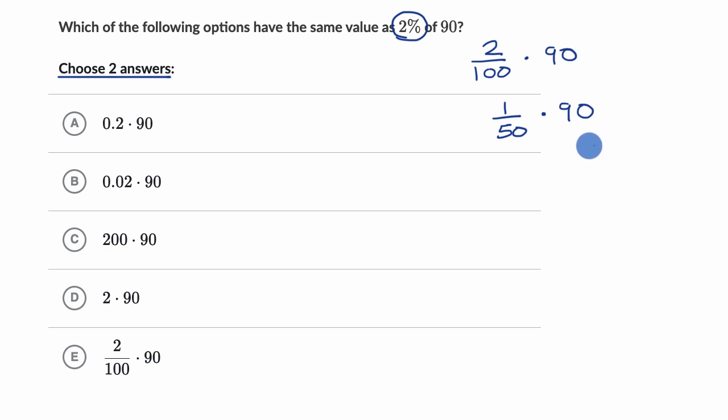Now let's see what other choices they have here. I could also write 2% as a decimal. Two hundredths should be written like this, 0 point. This is the tenths place. I have no tenths, but I have two hundredths. So I'm multiplying that by 90. All of these right over here are equivalent to 2% of 90.